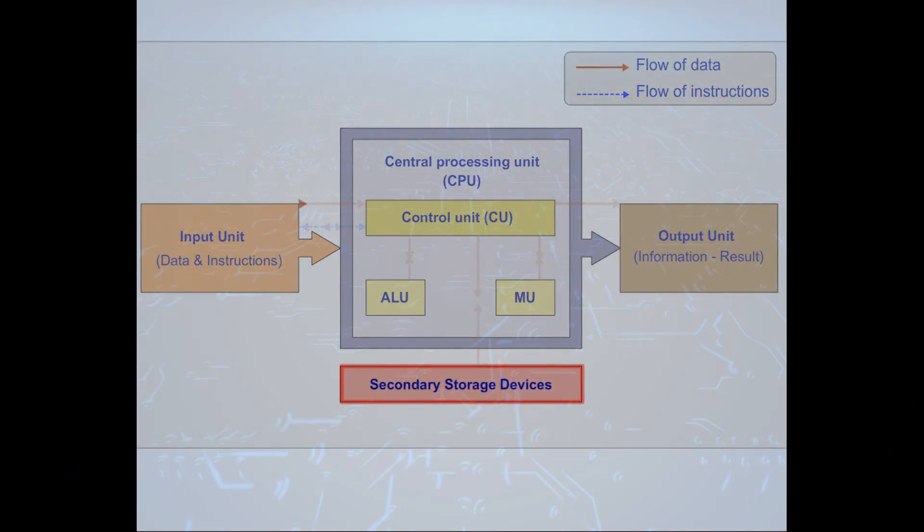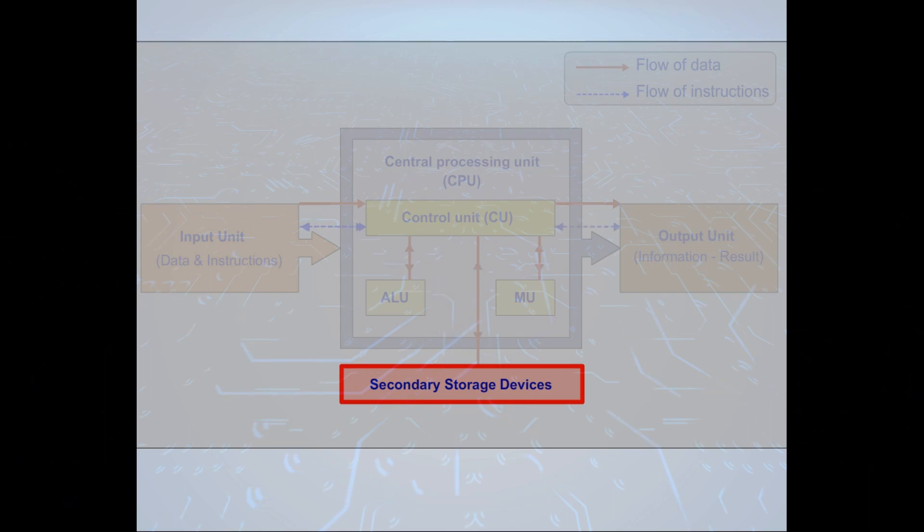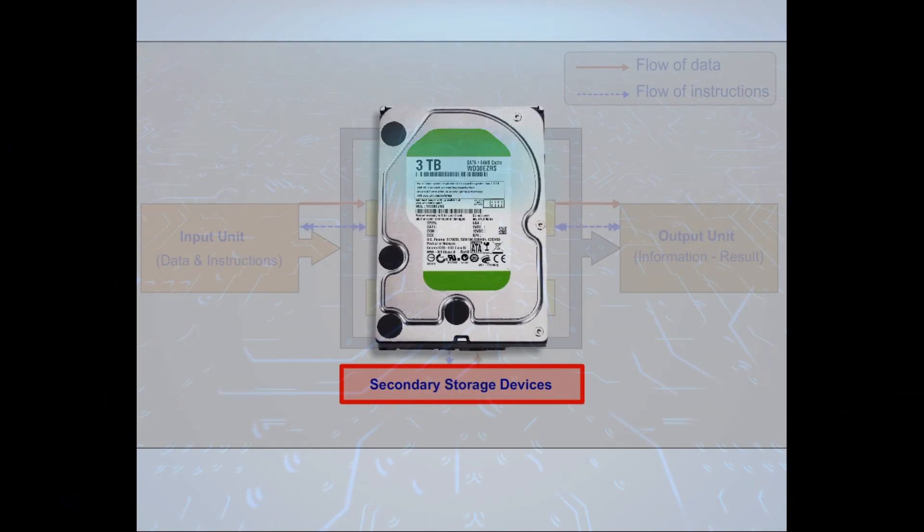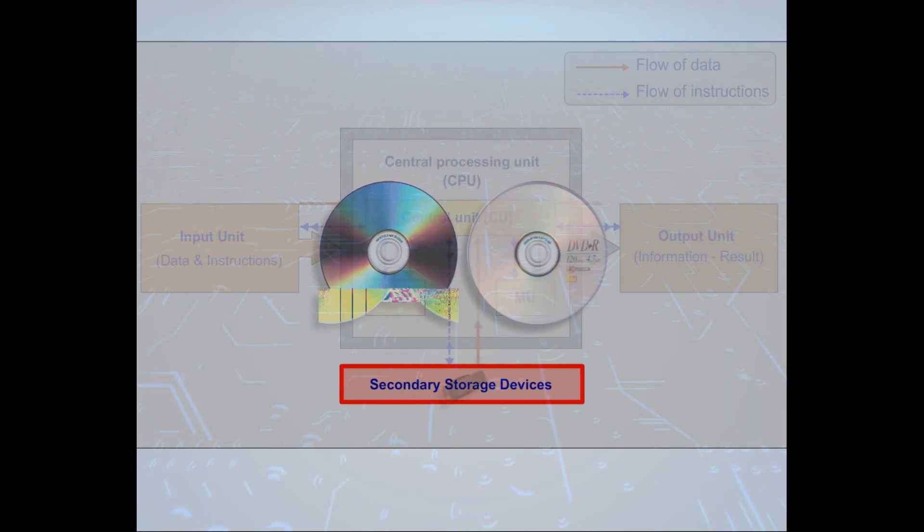Secondary storage devices like hard drives and SSDs store data for the long term, even when the computer is turned off. Examples of secondary storage devices include hard disk, DVD, pen drive, and memory card.